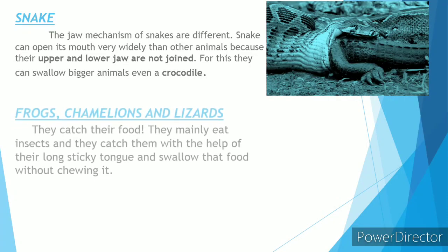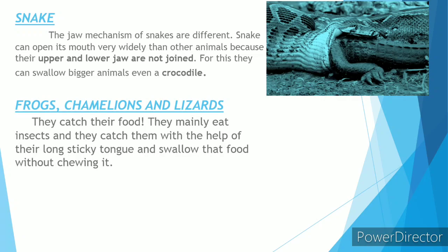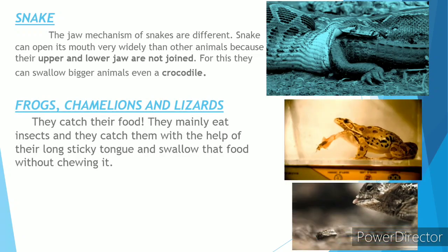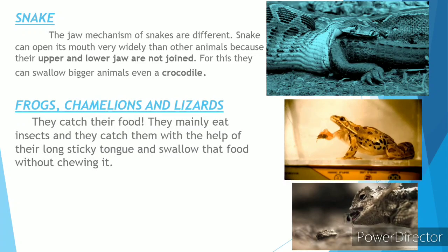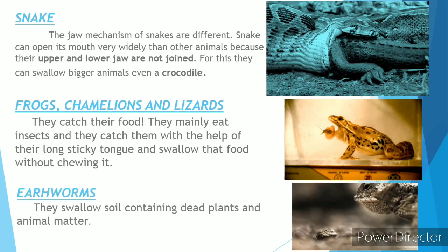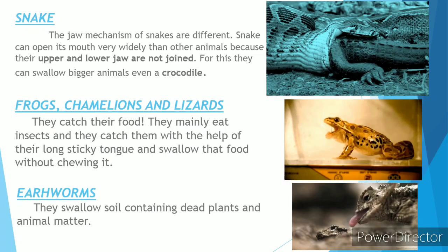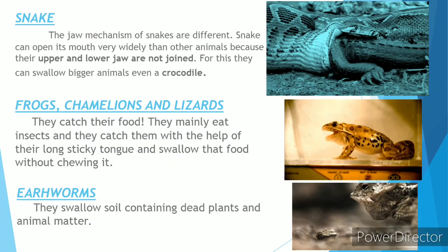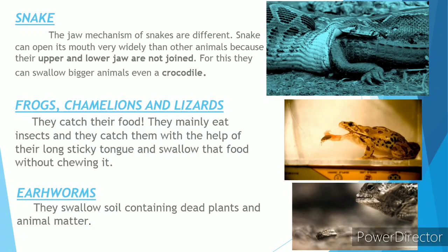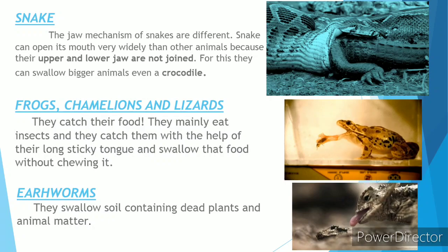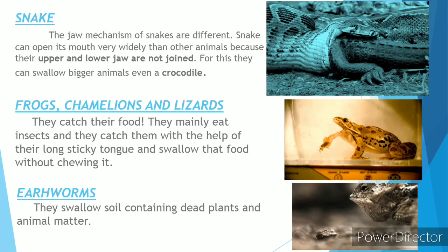Next are frogs, chameleons, and lizards — these are very interesting animals. See the pictures: frogs and chameleons catch their prey by throwing out their long, sticky tongues. Lizards catch their food by throwing their whole body forward and opening their mouth.